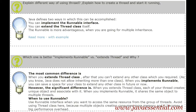The significant difference is that when you're extending the Thread class, each of your threads creates a unique object. But when we use the Runnable interface, the same object is shared across multiple threads.